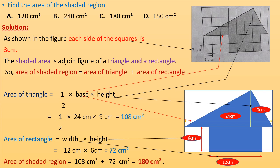Substituting these values in the formula, we get half into 24 cm into 9 cm equals 108 cm square. Now area of rectangle is width into height. There are 4 squares along the width of the rectangle, each with side 3 centimeters, so width will be 4 into 3 equals 12 centimeters.